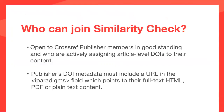So who can join Similarity Check? It's open to all Crossref publisher members who are in good standing and who are actively assigning article-level DOIs to their content. Members must ensure that they have full text URLs present in at least 90% of their article-level DOI metadata across all the member's journal prefixes, if applicable. These URLs need to point directly to the full text PDF, HTML, or plain text content. Members must also ensure that these links are included in all future deposits. Content must then be indexed and added to the Turnitin database. Indexing is done via as-crawled URLs, which must be present in your deposit metadata. Crossref will then tell Turnitin precisely what to crawl, pointing only to your DOI-identified content.